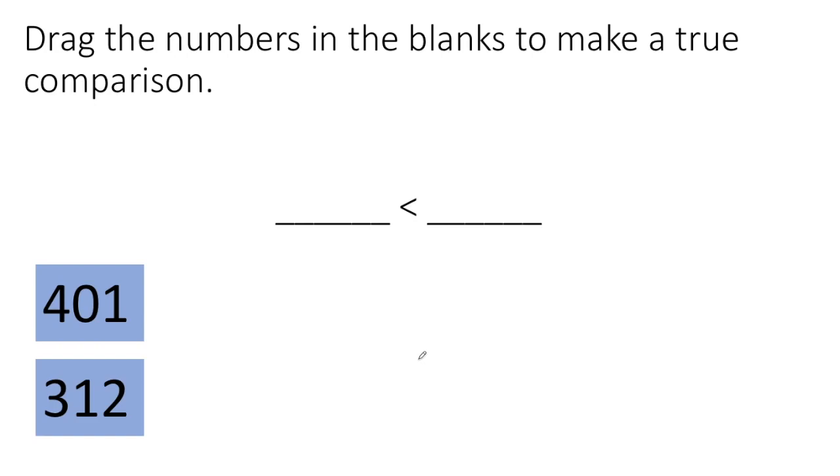Now sometimes we're going to be asked to see questions like this, where we have to drag the numbers in the blanks to make a true comparison. The first thing I do is I look at my symbol and I figure out what it means. It looks like the left hand, L, so I know that this means less than. So now I want this number to be less than this number. This number is going to be the small number. And this number is going to be the big number. Because small is less than the big.